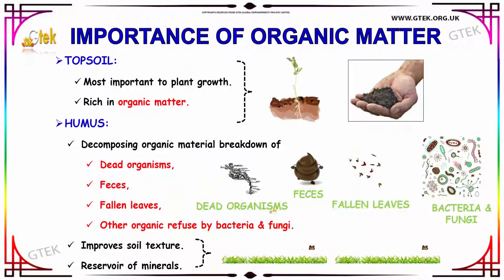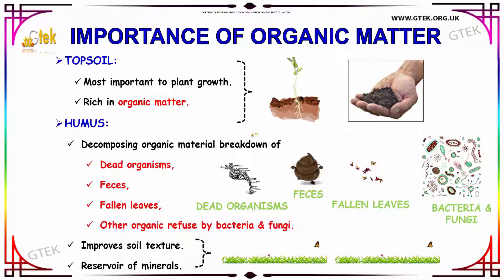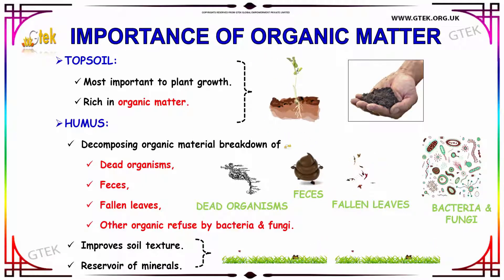Now we are going to see about the importance of organic matter. The first important thing is topsoil — it is the most important for plant growth. It is rich in organic matter. Another important component is humus. Humus is nothing but decomposing organic material.